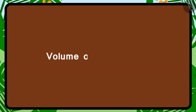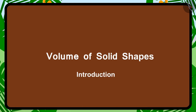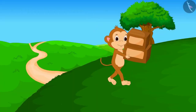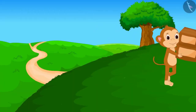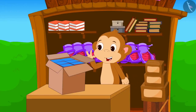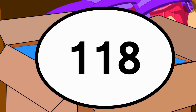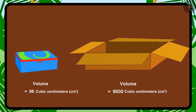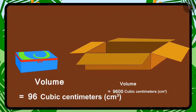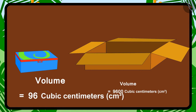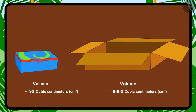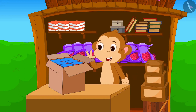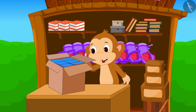Kids, in this video we will learn about volume of solid shapes. In the previous video, we saw how Baban used 2 boxes and brought 118 compass boxes from the city to sell in his shop. The volume of each compass box is equal to 96 cm³. Let us see what Baban is doing with these compass boxes.